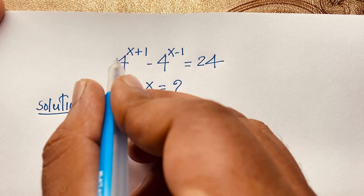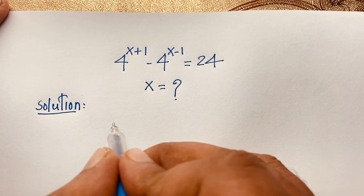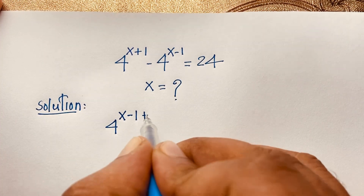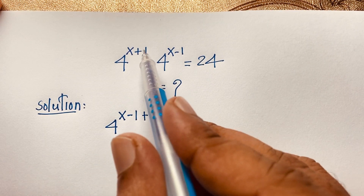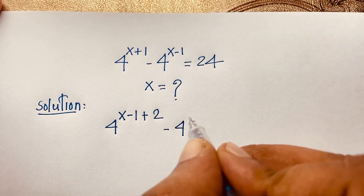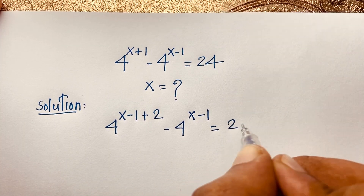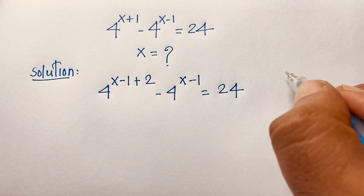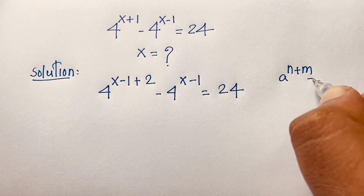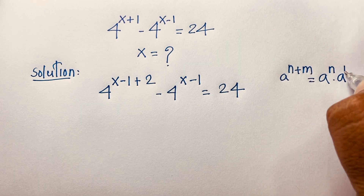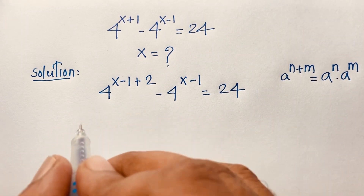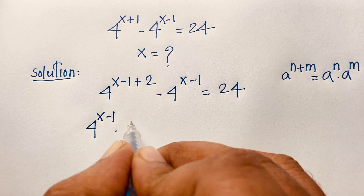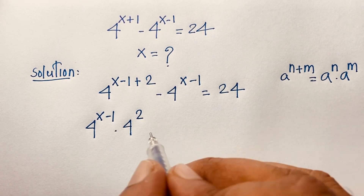First, you can see that 4 to the power x plus 1 can be rewritten as 4 to the power x minus 1 plus 2, since 2 minus 1 equals 1. According to the exponential law, a to the power n plus m equals a to the power n times a to the power m. Applying this law, the expression becomes 4 to the power x minus 1 times 4 to the power 2.